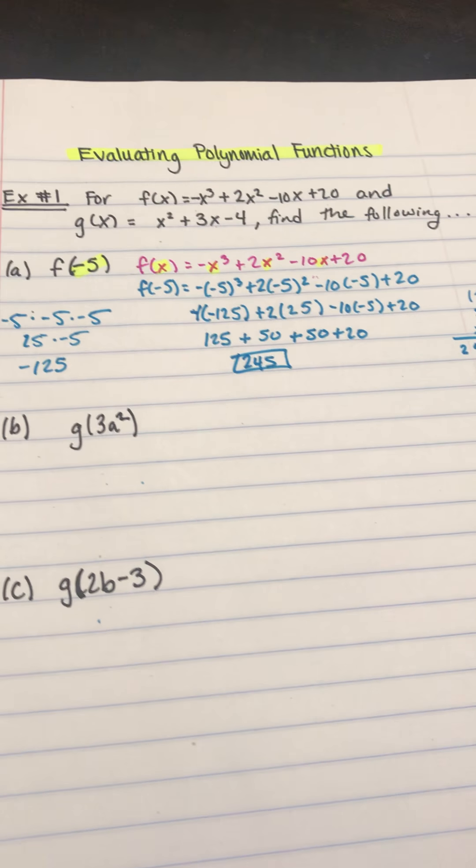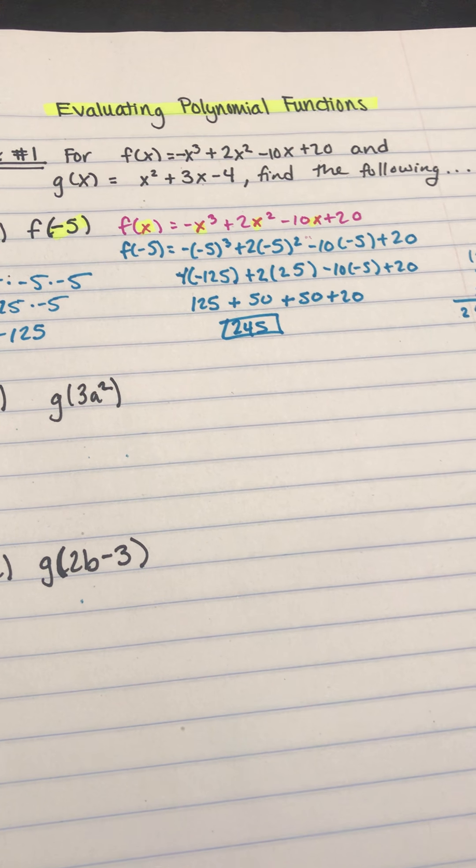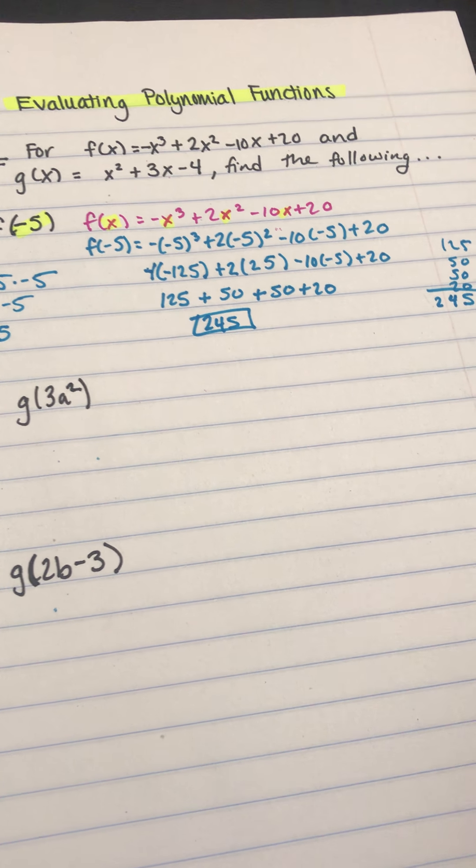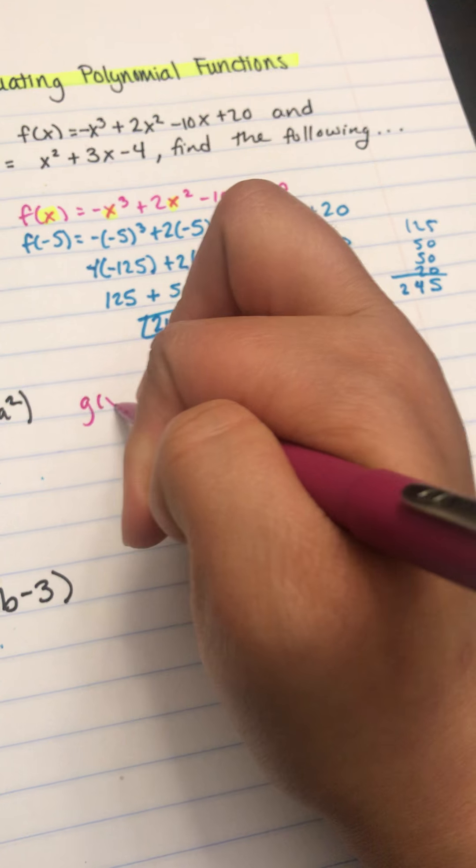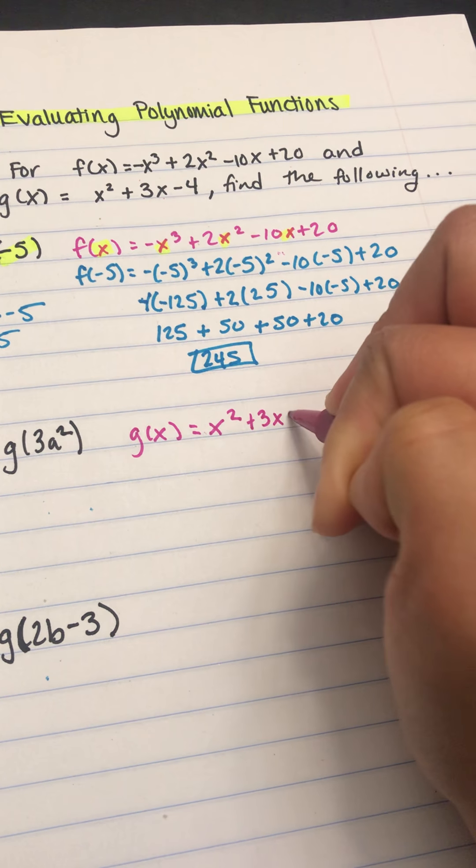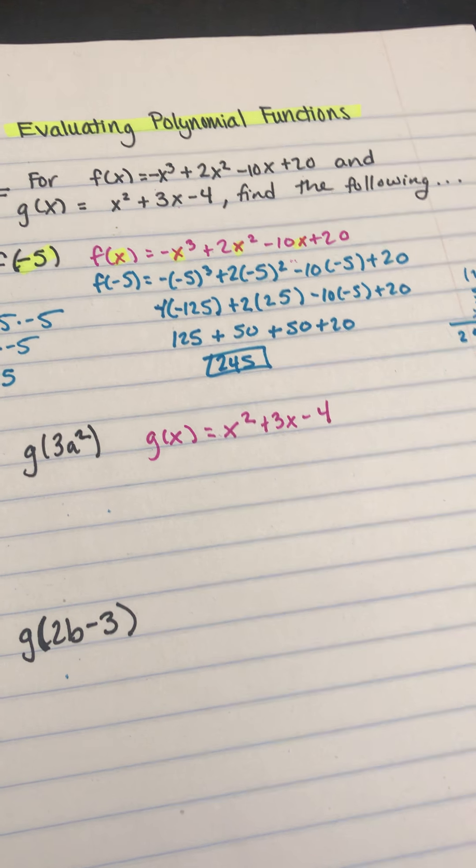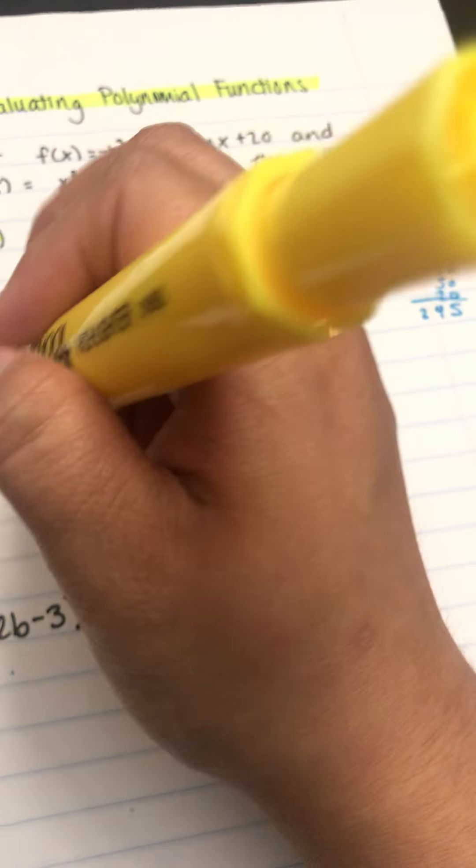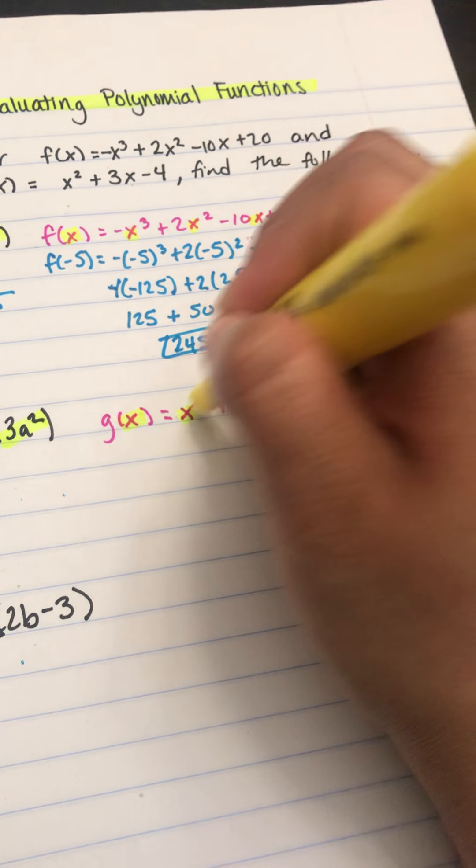Okay, the next problem we're going to find g of 3a squared. So I'm going to be using g of x for this one, which is x squared plus 3x minus 4. And everywhere I see an x, this time I'm going to plug in 3a squared in parentheses.